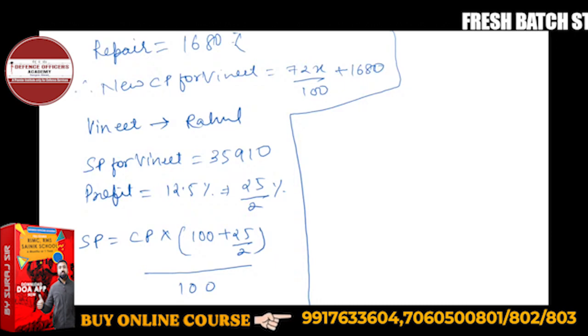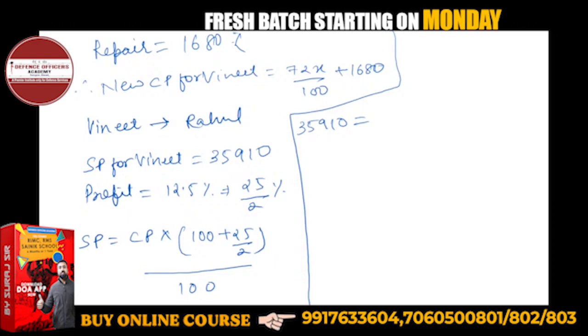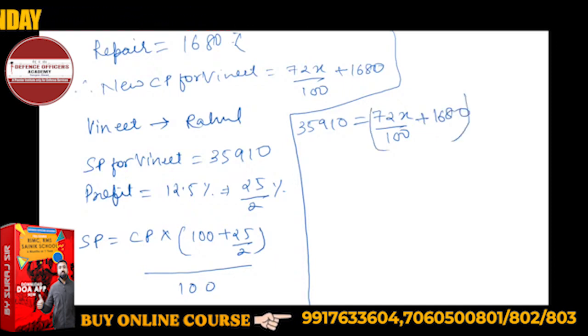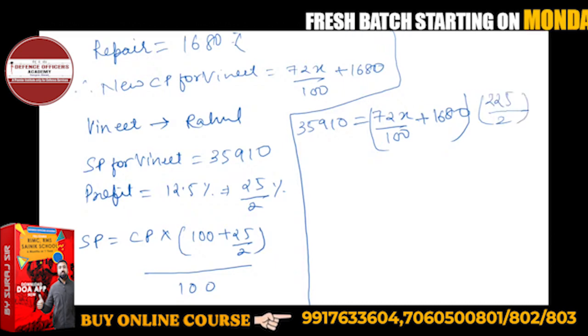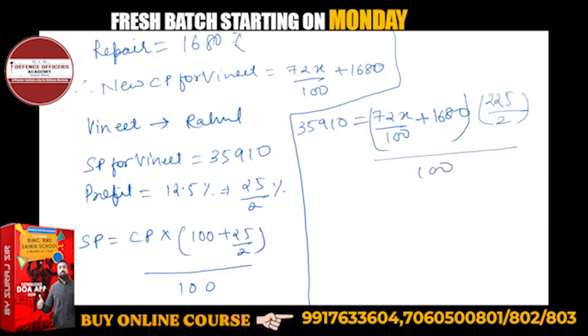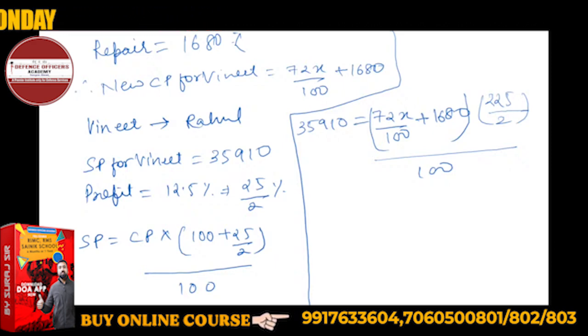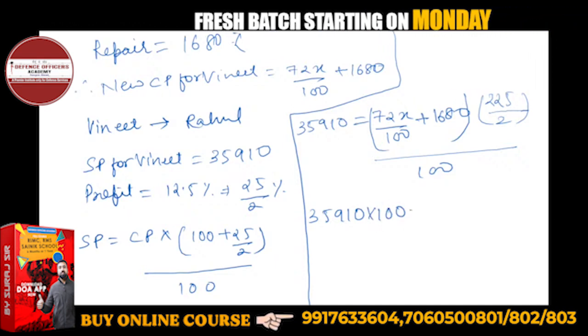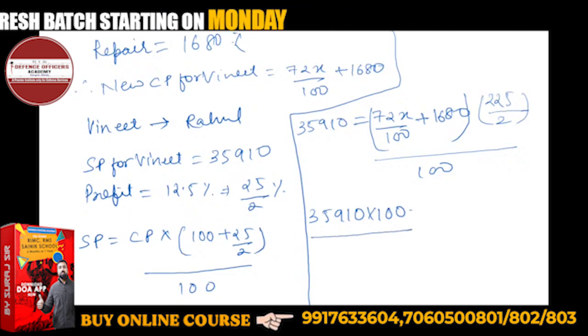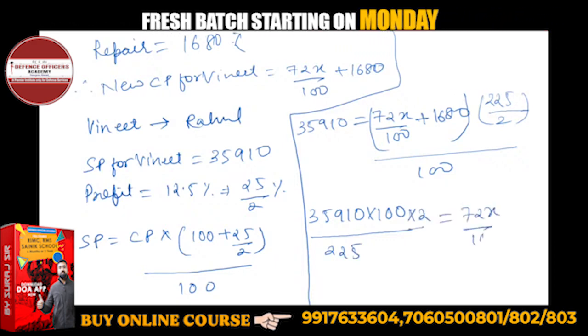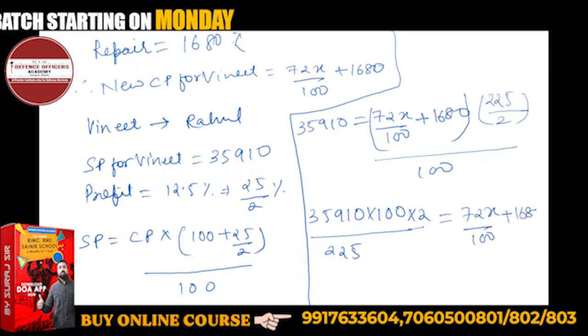Just put values. SP how much is? 35,910 is equal to CP how much is? 72X upon 100 plus 1680 in this bracket, and this is how much? LCM is 2, so this will be 225 by 2 upon 100. So this is the calculation. Now nothing is just calculation. Multiply, so this will come 35,910 into 100 is equal to, 2 will go in the numerator, so this will be 225 upon 2, is equal to 72X upon 100 plus 1680.